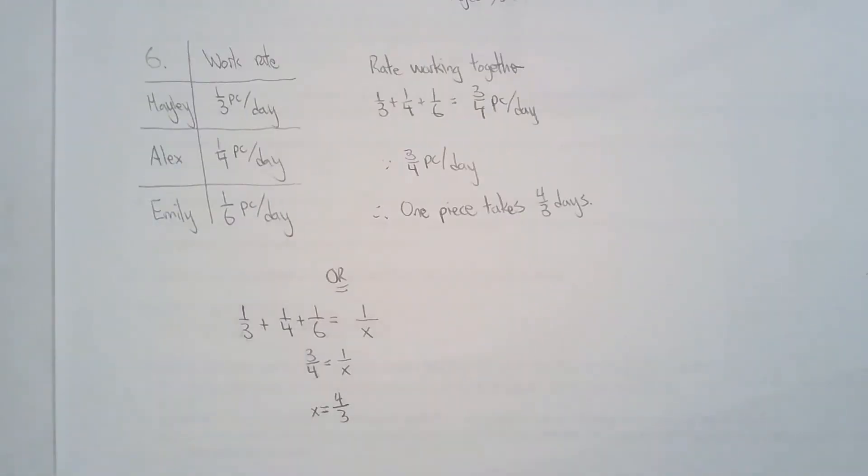Number six is a very common question in the United States—I see this question all the time so I felt obligated to put this question here. This version of the question is actually rather simple. We have three people: Haley finishes one-third of a piece per day because it takes her three days to finish a job. If it takes her three days to finish the job, each day she'll be able to finish a third of the job. It takes Alex four days to finish the job, so every day he'll accomplish a quarter of the job. Emily would finish a sixth of the job per day. That's called the work rate.